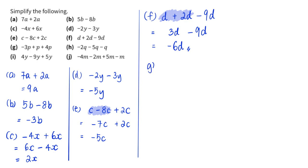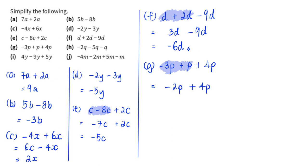Part g: negative 3p plus 1p plus 4p. Again, from left to right: negative 3p plus 1p gives negative 2p, then negative 2p plus 4p — 4 minus 2 — gives positive 2p.